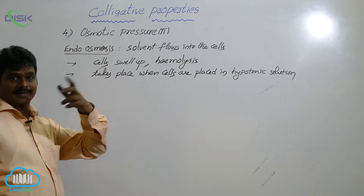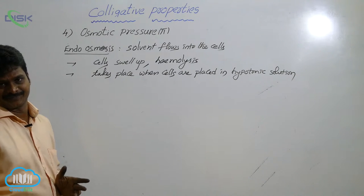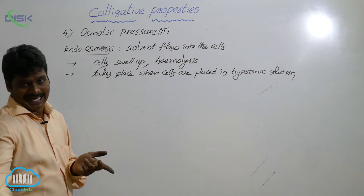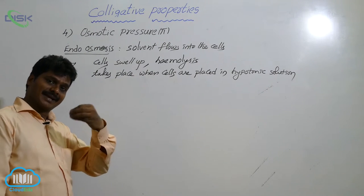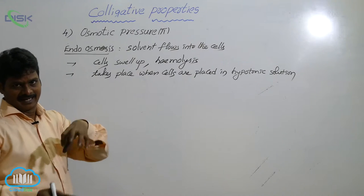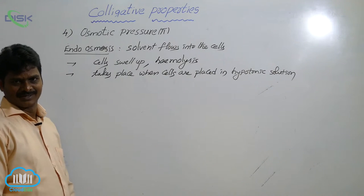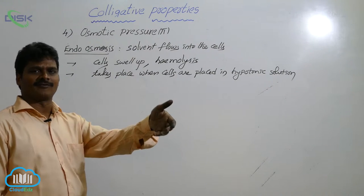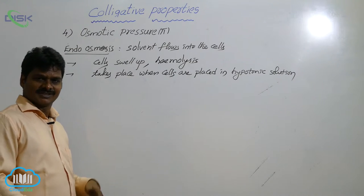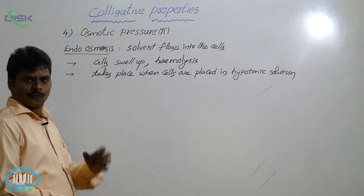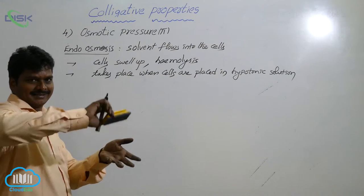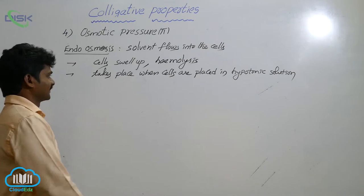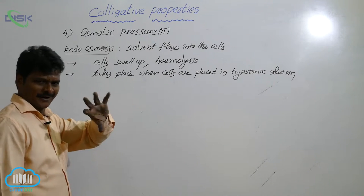When two solutions are separated by an SPM, osmosis occurs — solvent moves from low to high concentration. Here, pure water is low concentration and the fluid inside the grape is high concentration. So pure water enters into the grape through the membrane, causing the size of the grape to increase. Because of endosmosis, the size of the cell increases.